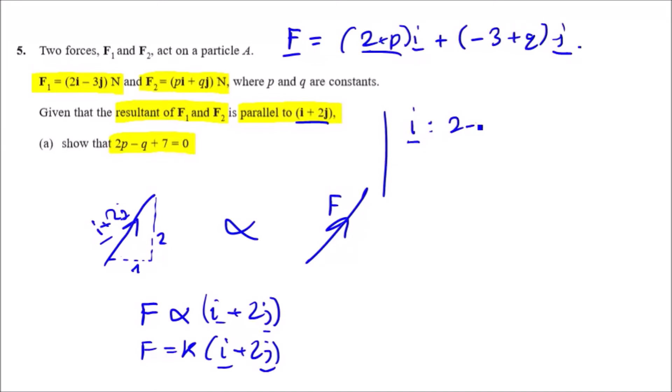Because we've got 1i here and 2j. As for j, we can say that the vector minus 3 plus q under the j part is equal to some scale factor of 2, times 2.